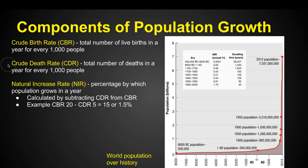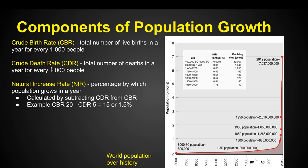But we also look at the crude death rate, the CDR, which is the total number of deaths in a year for every 1,000 people. If we're having a lot of babies — our birth rate is up — but our death rate is also up, then our population isn't going to grow very much.